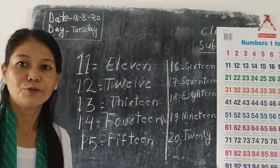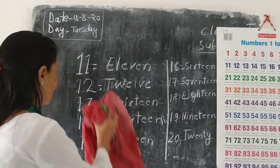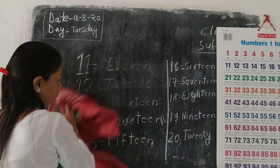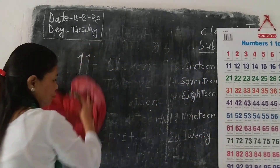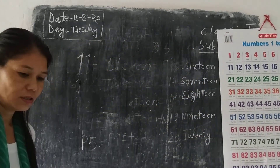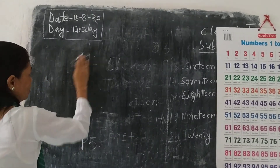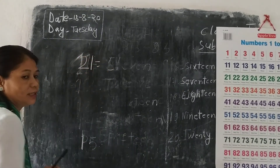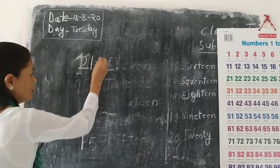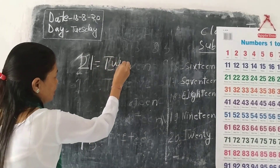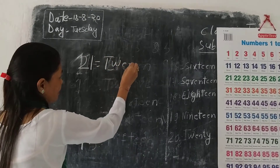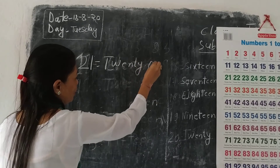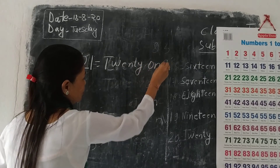21 — T-W-E-N-T-Y O-N-E. 21. And 22 — T-W-E-N-T-Y T-W-O. 22.